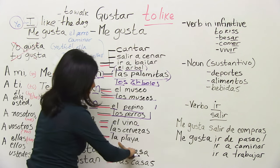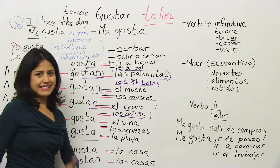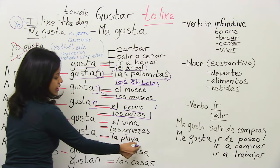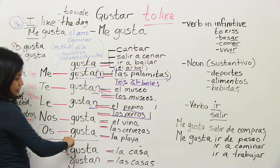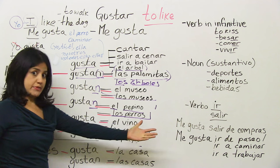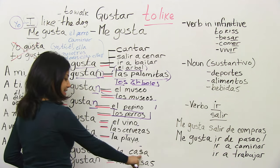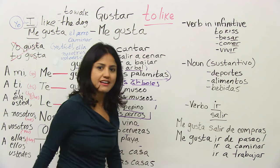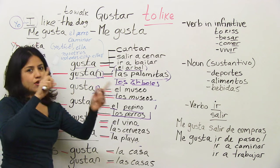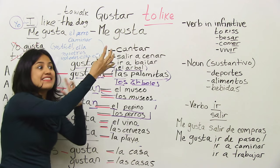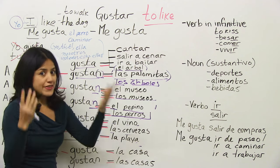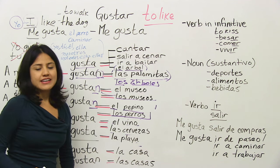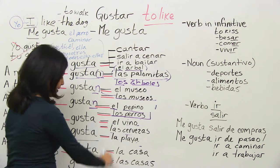'Os gusta la playa' — singular. 'Os gustan las manzanas' — plural. I don't really use that pronoun since I'm from Mexico, but it works the same way. 'Les gusta la casa' — they like the house (singular). 'Les gustan las casas' — they like the houses (plural). Don't forget the 'n.' It depends on whether the noun is singular or plural: 'me gusta' for one, 'me gustan' for more than one.